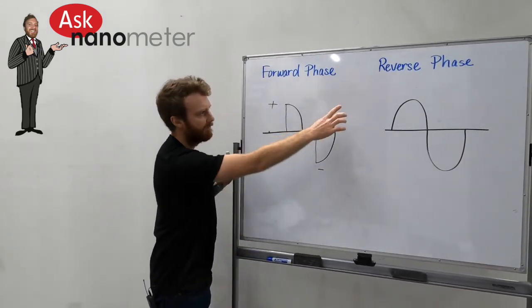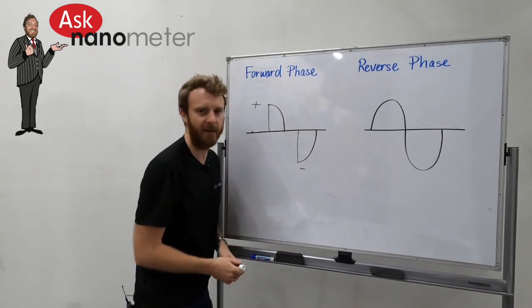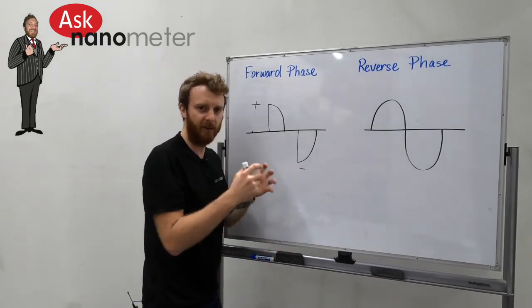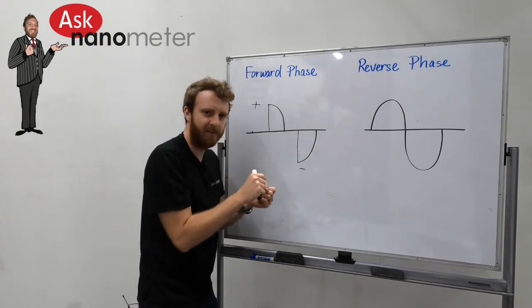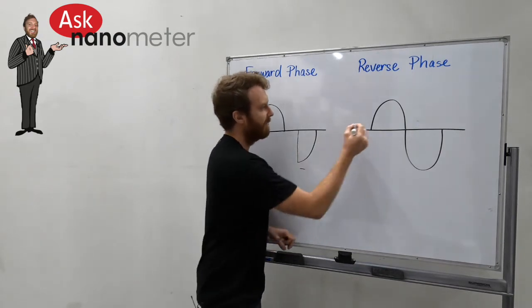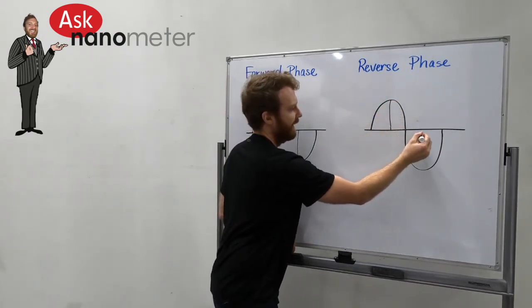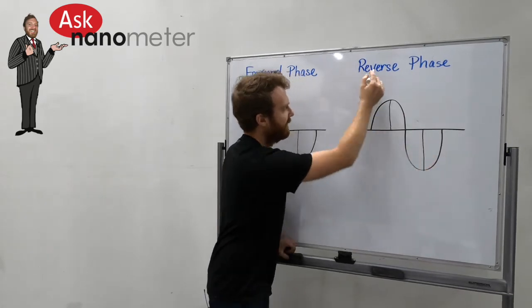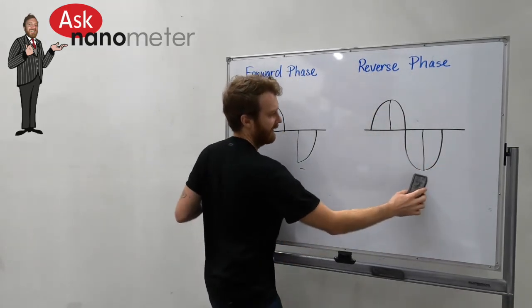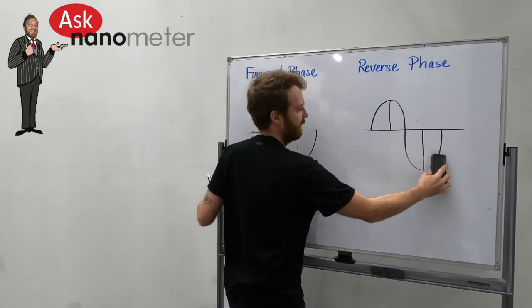Similarly, on the reverse phase dimmer, if I take a reverse phase dimmer and set it to 50 percent, it's going to do the same thing. It's going to cut that wave in half again. Only this time, because it's reverse phase, we're actually hacking off the backside of that wave.